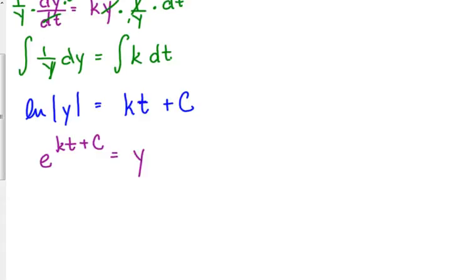E to the kt plus c came from multiplying e to the kt by e to the c. I'm using my properties of exponents to go backwards. Remember properties of exponents, when you multiply by the bases, you can add their exponents. So I'm going backwards with that.